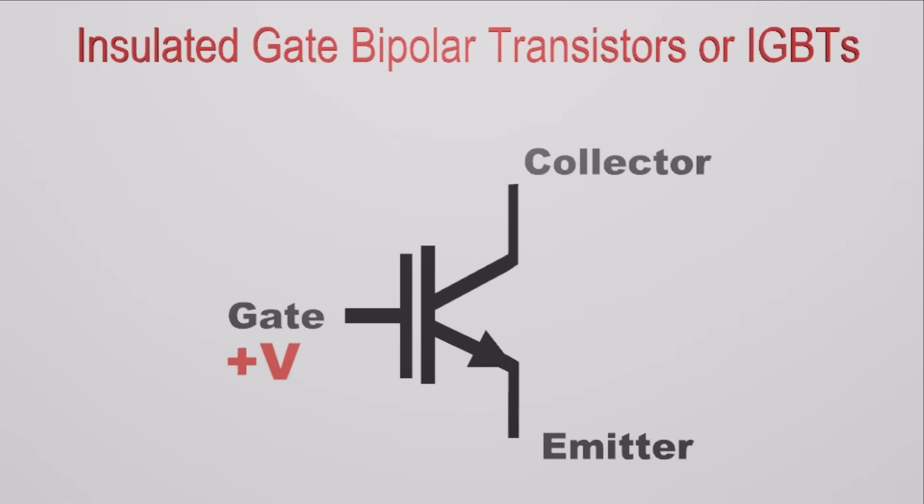If we make the gate more positive by applying voltage across the gate, current can flow from the collector to emitter. So the IGBT in its on state. If we make the gate negative or zero, the current flow stops and IGBT will remain in off state.